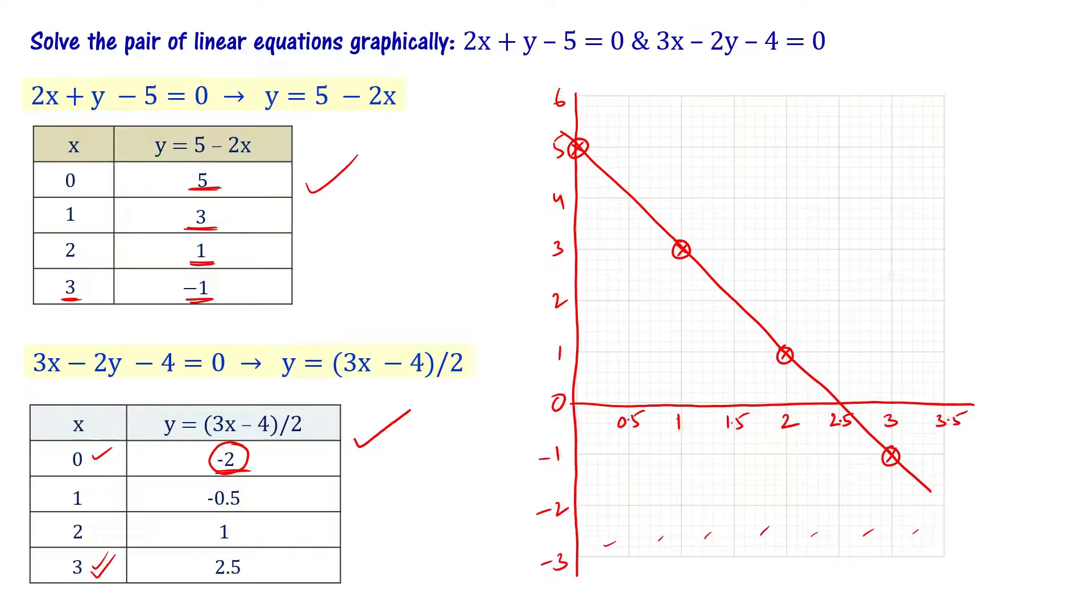Now let's plot the second equation data: x = 0, y = -2; x = 1, y = -0.5; x = 2, y = 1; x = 3, y = 2.5. Let me draw a straight line passing through these points. This is the graph representing these two equations - this is first equation and this one is second equation.